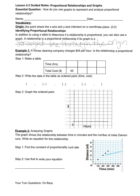Our first example: A house cleaning company charges $45 per hour. I want to know if this relationship is proportional. So the first way that I'm going to look to see if I have a proportional relationship is to make a table from that information. So I know it charges $45 per hour—that means in one hour, it charges $45. In two hours it would charge $90. In three hours it would charge $135, and in four hours it would charge $180.